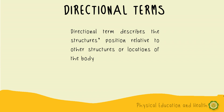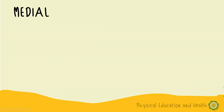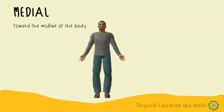Directional terms describe the structure's position relative to other structures or locations of the body. We have lateral and medial, superior and inferior, proximal and distal, and anterior-posterior. Medial means toward the midline of the body — it is any point closer to the midline.